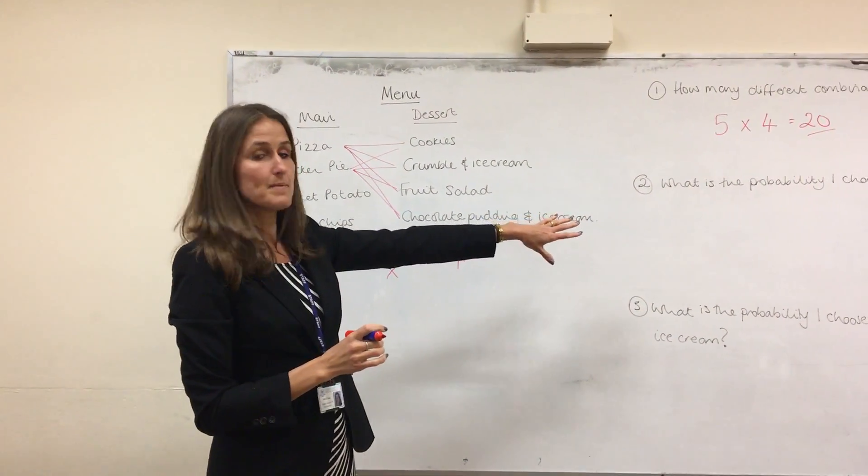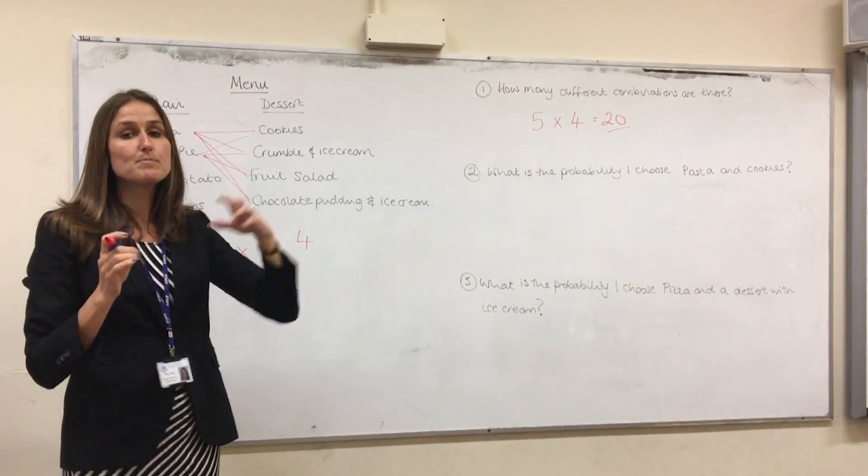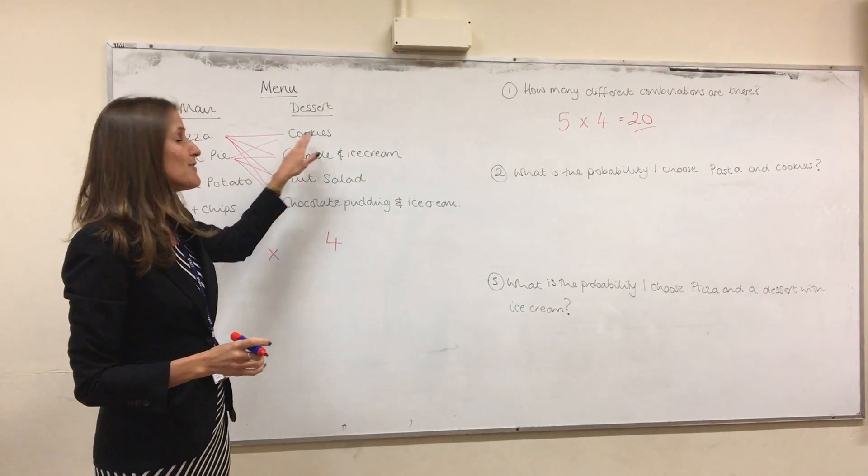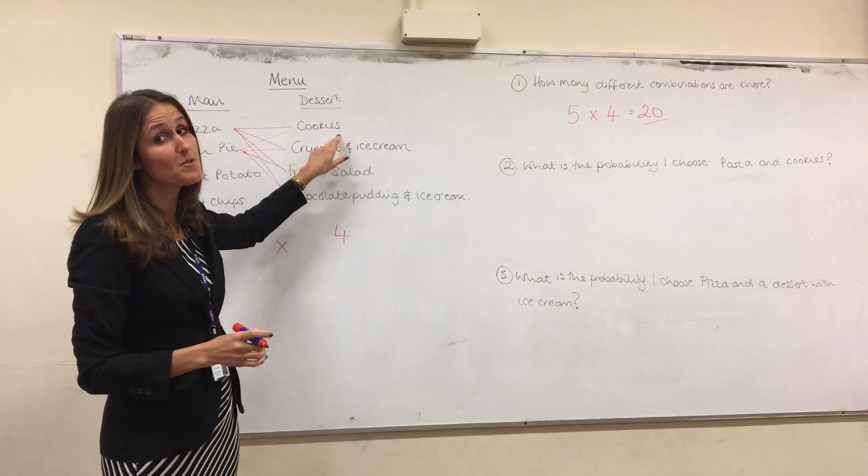The second part of the question is: what is the probability that I choose pasta and then followed by cookies?